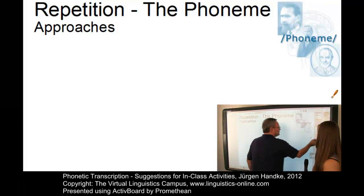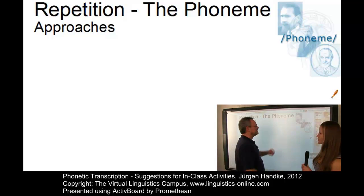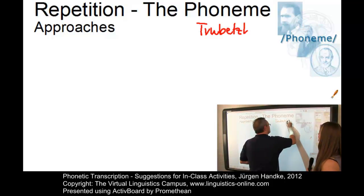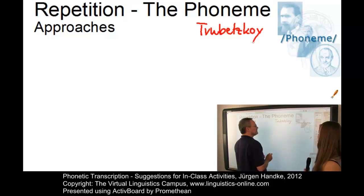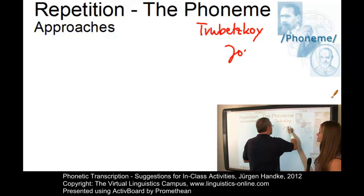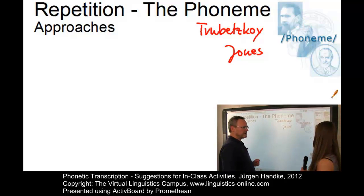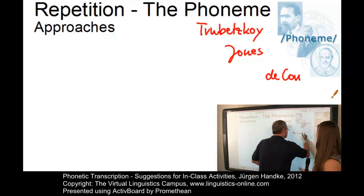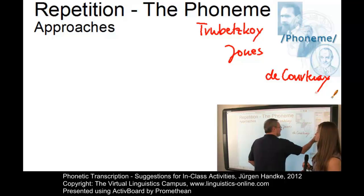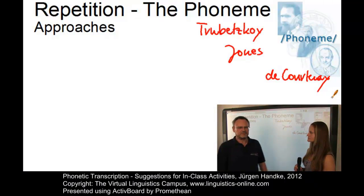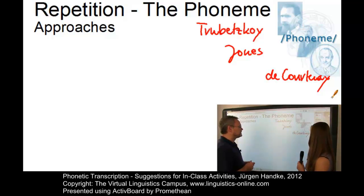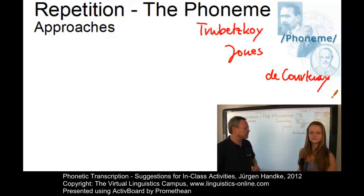Here you see three figures who have something to do with the phoneme. The first one is Nicolai Trubetskoy, the second is Daniel Jones, and the third is Baudouin de Courtenay. Trubetskoy defined the functional view, Jones the physical view, and de Courtenay the psychological view — the three views of the phoneme.